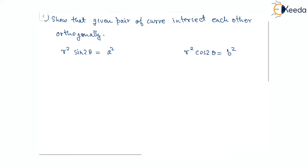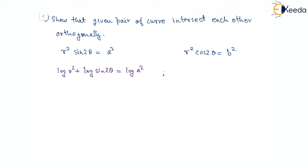First of all, let's take log and differentiate both polar curves with respect to theta. For the first curve, this gives log r² + log sin 2θ = log a². For the second curve, log r² + log cos 2θ = log b².